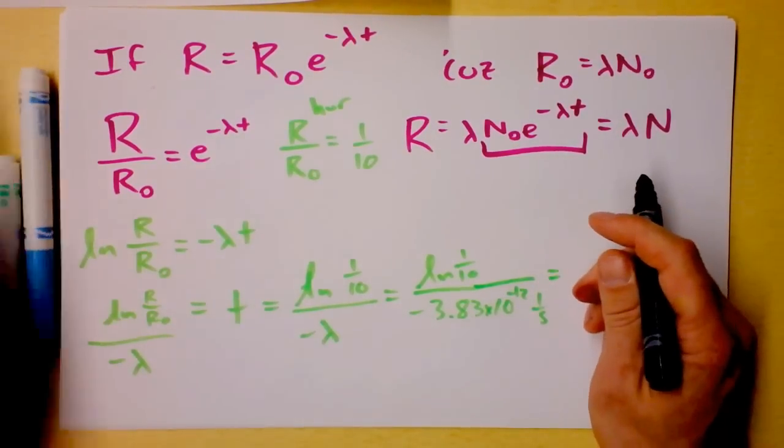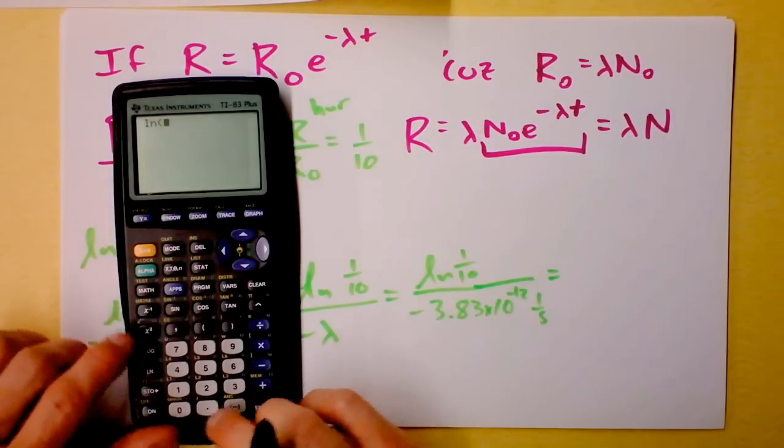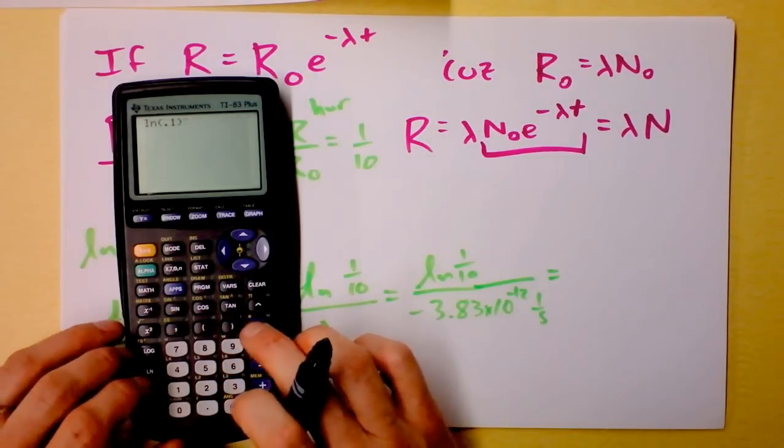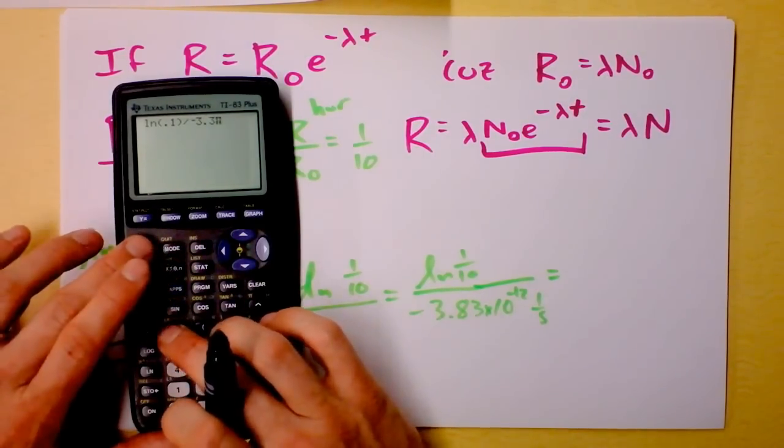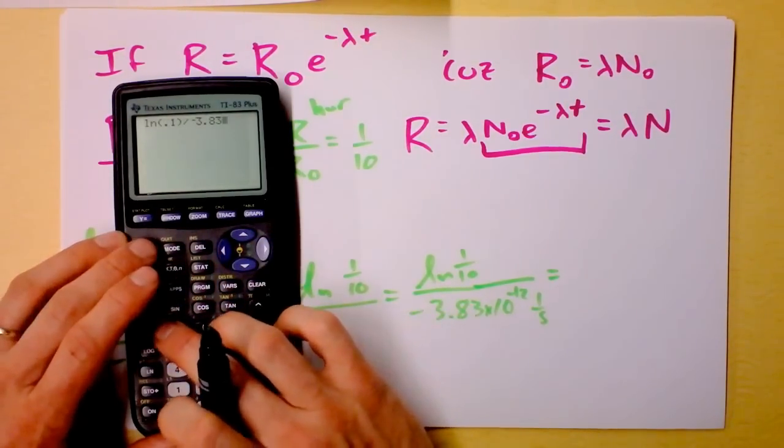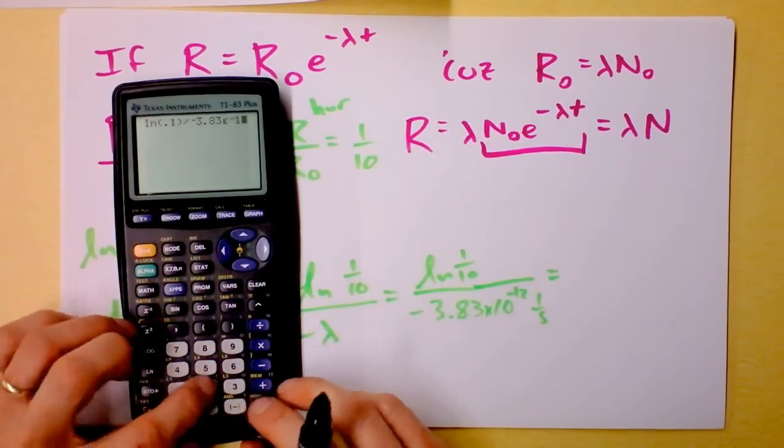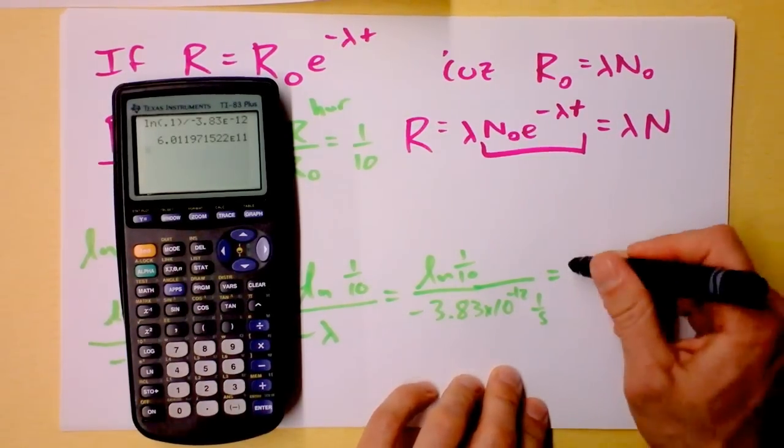So, this is not going to be a happy time. Let's do this. Natural log of one tenth and then I divide it by negative 3.83 times. Oh, where's my eight? 8.3 times ten to the negative twelfth. I hit enter right there and I get, oh my goodness, that's a very long time. 6.01197 seconds.